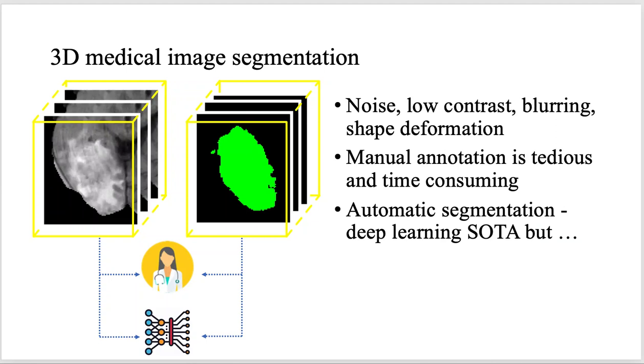By exploiting local structures and semantic similarities, elegantly designed deep networks effectively addressed the common issues of noise, low-contrast blurring, and shape deformation in medical images. But deploying such methods in clinical applications faces certain difficulties.